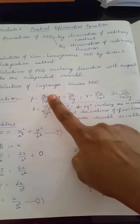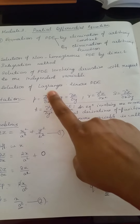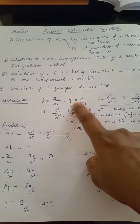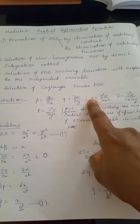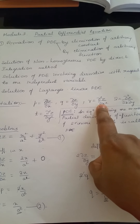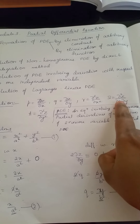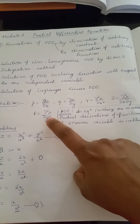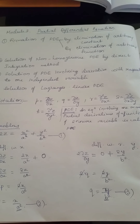We are going to use some notation here. P is equal to ∂z/∂x. Q is equal to ∂z/∂y. R is equal to ∂²z/∂x². S is equal to ∂²z/∂x∂y. And T is equal to ∂²z/∂y².